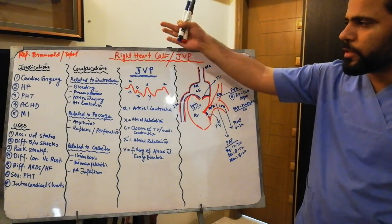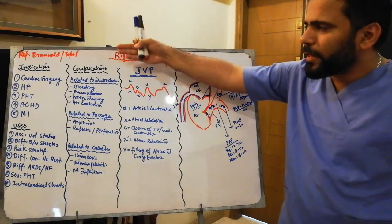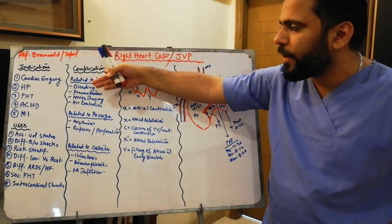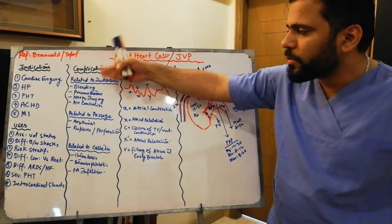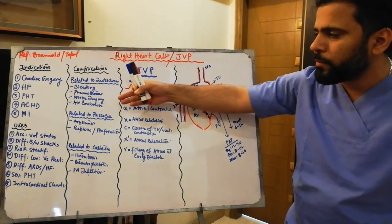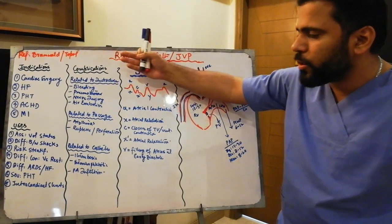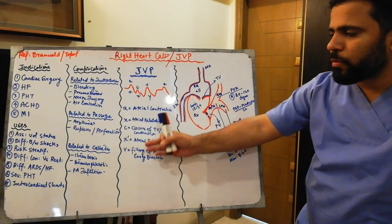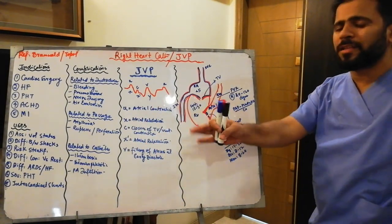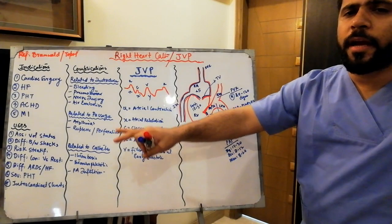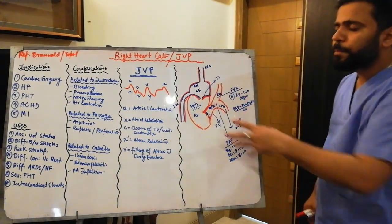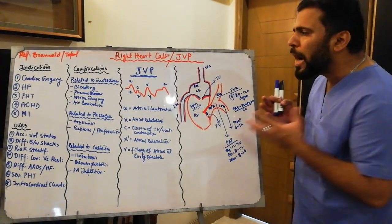Regarding complications: bleeding, pneumothorax, nerve injury, air embolism, rupture, perforation, thrombosis, catheter thrombosis, thrombophlebitis, and infection. These are important to know but the more important thing is understanding how to perform and interpret the right heart cath.